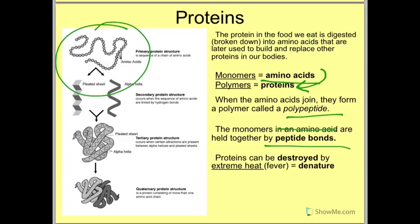Proteins can be destroyed by extreme heat. When you have a fever, these proteins will start to unfold — they have a very specific folding structure. When they unfold, they lose their shape, they aren't able to do the jobs they're supposed to do anymore, and we feel the effects. This is called denaturing — when a protein is destroyed or loses its shape.